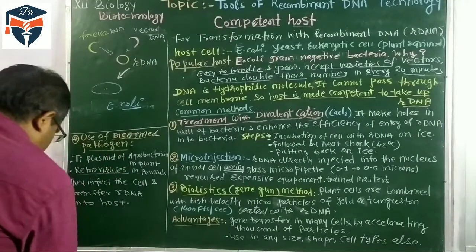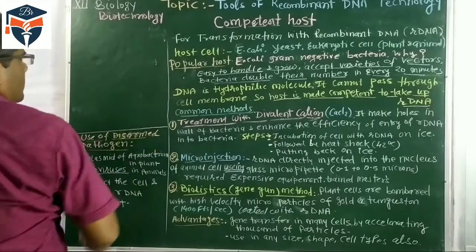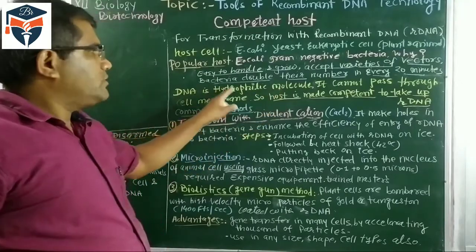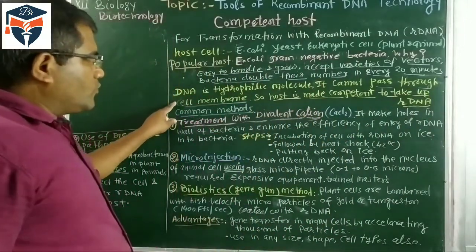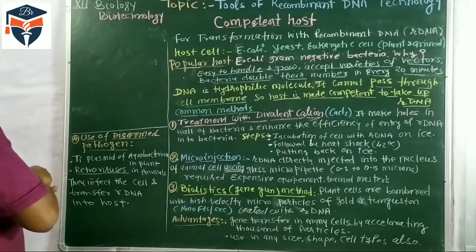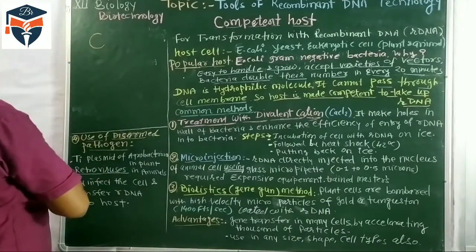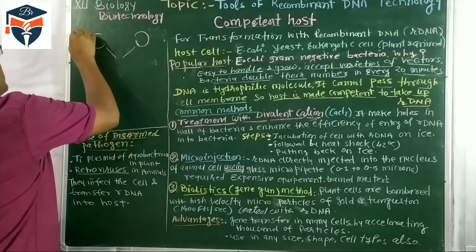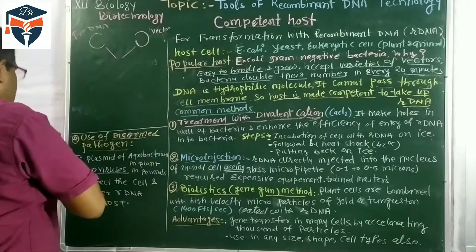Students, an important point here — the DNA molecule is a hydrophilic molecule, so it cannot pass through the cell membrane. The host must be made competent to take up the DNA. The foreign DNA and vector DNA are combined to form recombinant DNA, and this recombinant DNA must be introduced to the host cell — for example E. coli.